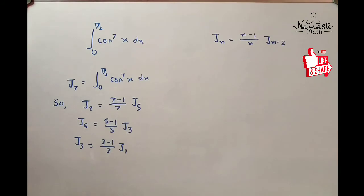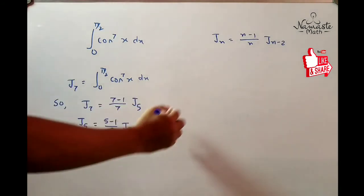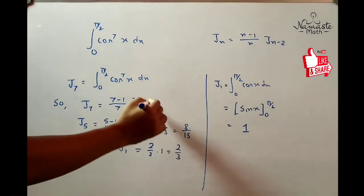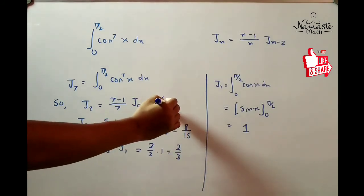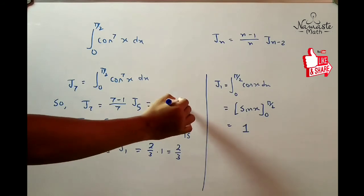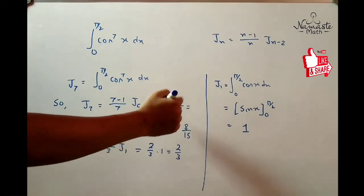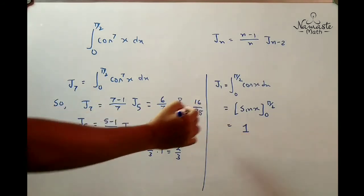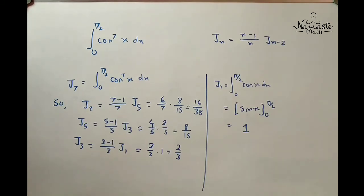You just do a similar approach as the previous example. If the power is an even integer, you must stop at J2. For even integers stop at J2, and for odd integers like cos^7 or sin^7, stop at I1 or J1. Now you can see J1 = 1, and just substitute the values in J1, J3, and you get the values respectively as J3, J5, and J7, and you will get the required answer.